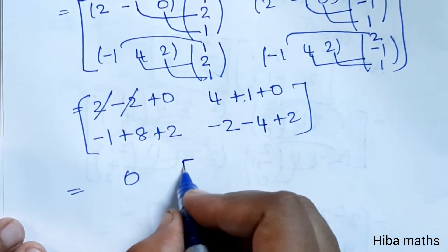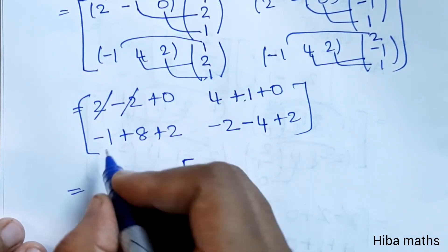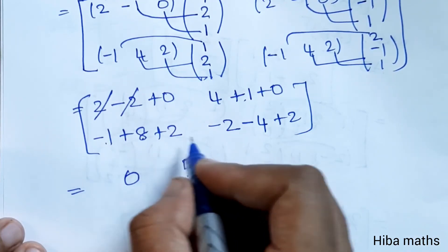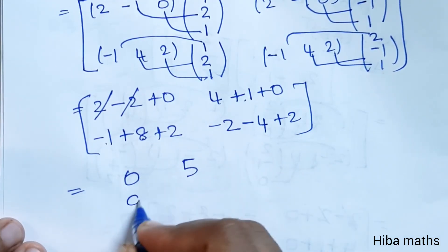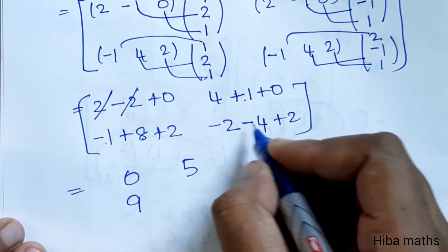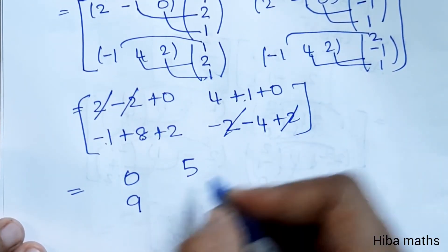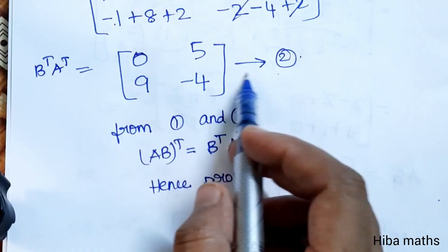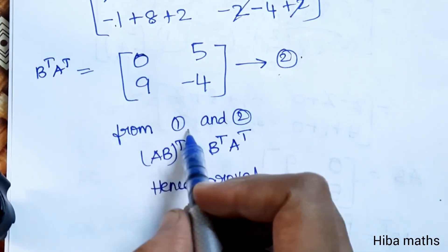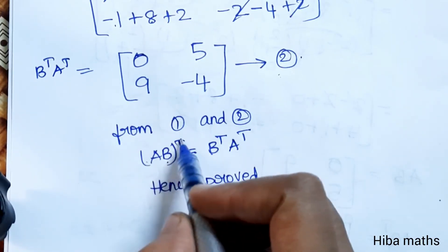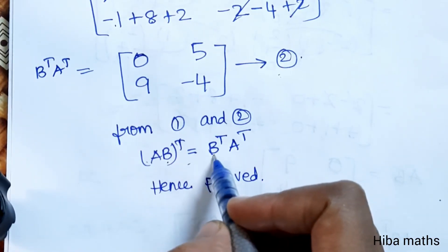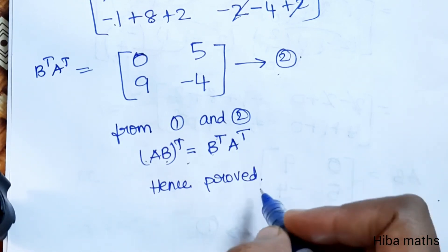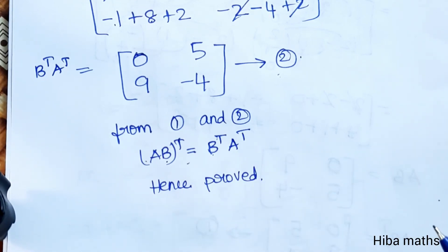Result: 0, 4 plus 1 is 5, 8 minus 1 is 7, 7 plus 2 is 9. Plus 2 minus 2 cancel, minus 4. 1st result and 2nd result match. Therefore from (1): (AB)ᵀ equals BᵀAᵀ. Hence proved.